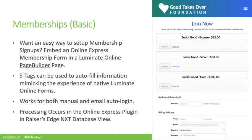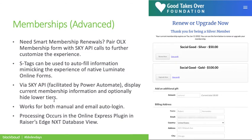Likewise, the same thing can be done with memberships. Here on the screen, you see a version of a basic approach. A more advanced option, utilizing Sky API and Power Automate, can allow you to further tailor the renewal experience. This includes recognizing and thanking the constituent for their current membership, and presenting them with targeted renewal and upgrade options. Notice we have hidden the bronze option from Robert, who is already a silver member.